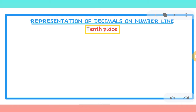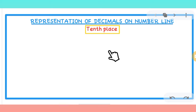Hello kids, today's topic is representation of decimals on a number line. The tenths place is the place just after the decimal. For example, in 4.2, the digit 2 is in the tenths place. Now we will learn how to represent 4.2 and similar numbers on the number line.